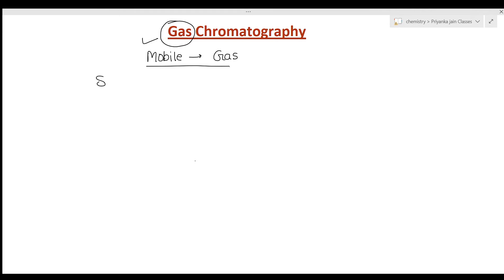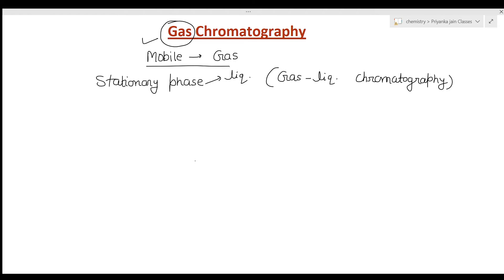There are two phases: mobile phase and stationary phase. The stationary phase may be of two types. Whenever the stationary phase is liquid, the technique is known as gas-liquid chromatography, and whenever the stationary phase is solid, it is known as gas-solid chromatography.